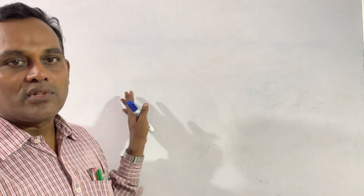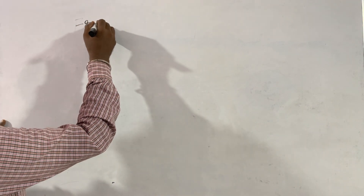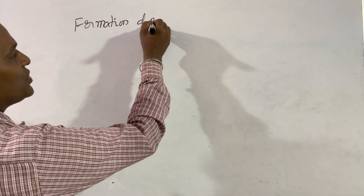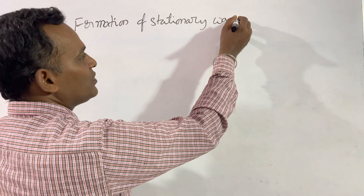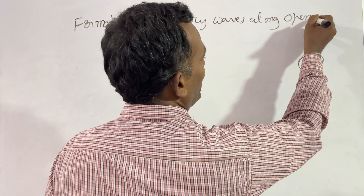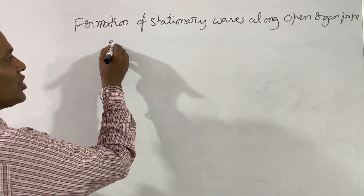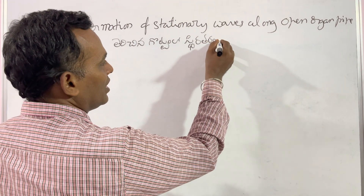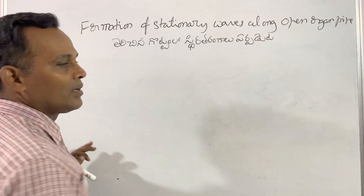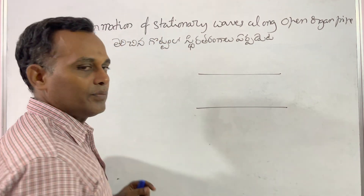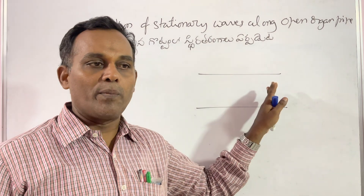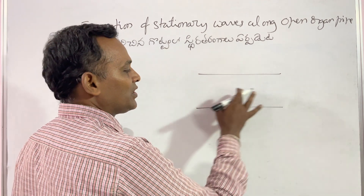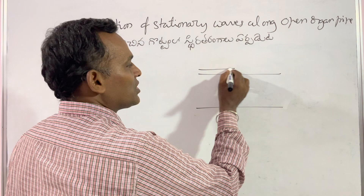We want to discuss the formation of stationary waves along a stretched string. Our aim is the formation of stationary waves along an open organ pipe. First of all, we consider an open organ pipe — a metal tube which opens at both ends is called an open organ pipe, or simply an open pipe. We consider an open organ pipe of length L.